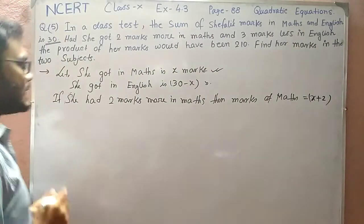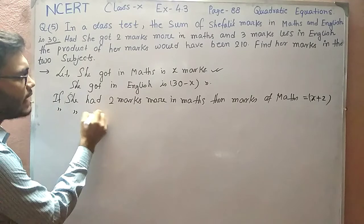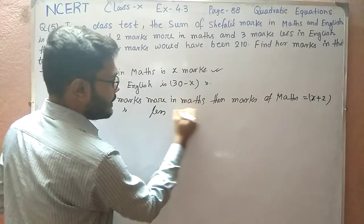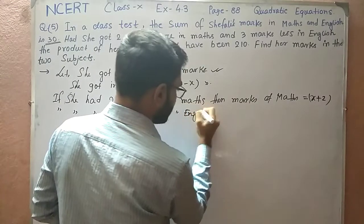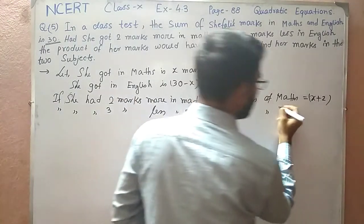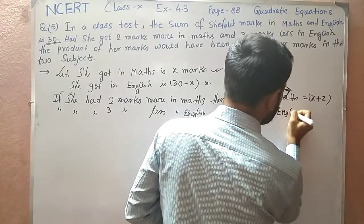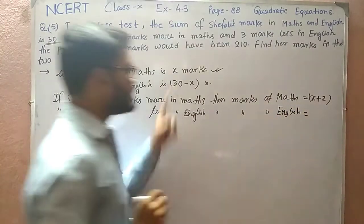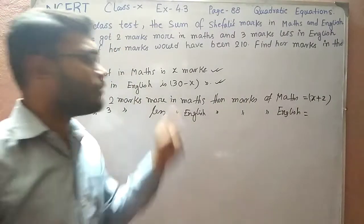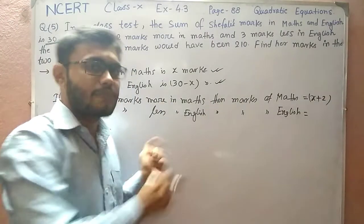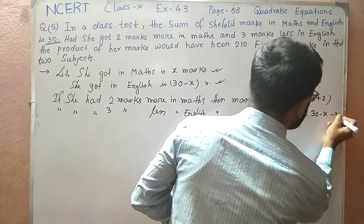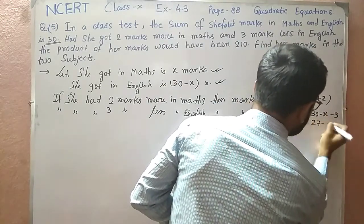She is getting 3 marks less in English. It was previously 30 minus x; now she is getting 3 marks less than that, so marks of English would be 30 minus x minus 3, which equals 27 minus x.